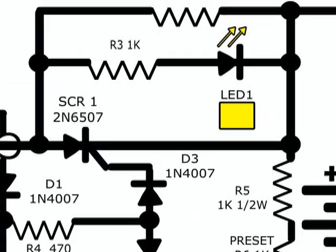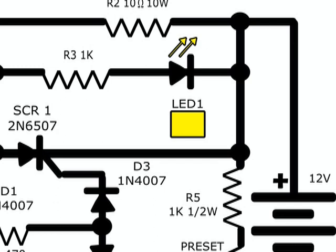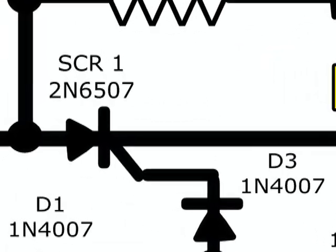From the positive output of the diode bridge, the pulsating DC goes through the SCR1 silicon control rectifier into its anode and out from its cathode and goes on to the positive terminal of the battery being charged.